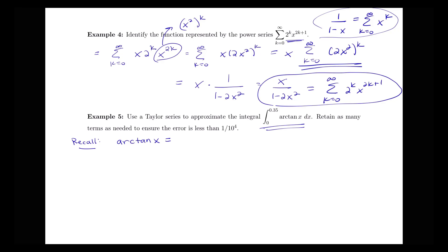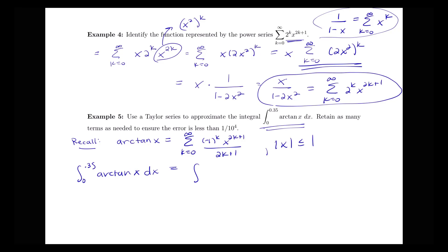The Taylor series for arctan(x) equals the sum from k equals 0 to infinity of negative 1 to the k times x to the 2k plus 1, all over 2k plus 1, where the interval of convergence is the absolute value of x less than or equal to 1. Now to approximate this definite integral, we integrate the power series and then plug in the bounds. So our integral from 0 to 0.35 of arctan(x) equals the integral from 0 to 0.35 of the sum from k equals 0 to infinity of negative 1 to the k times x to the 2k plus 1, all over 2k plus 1.